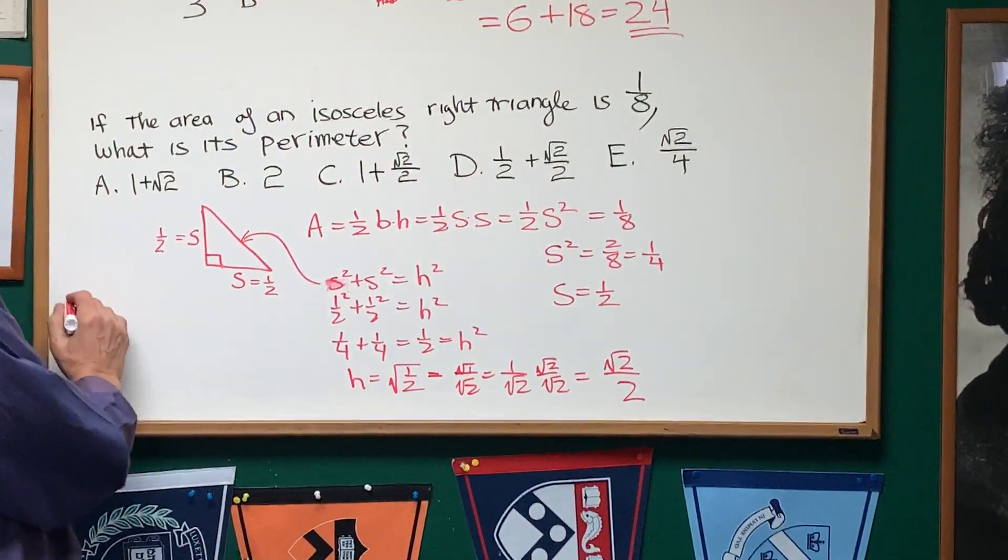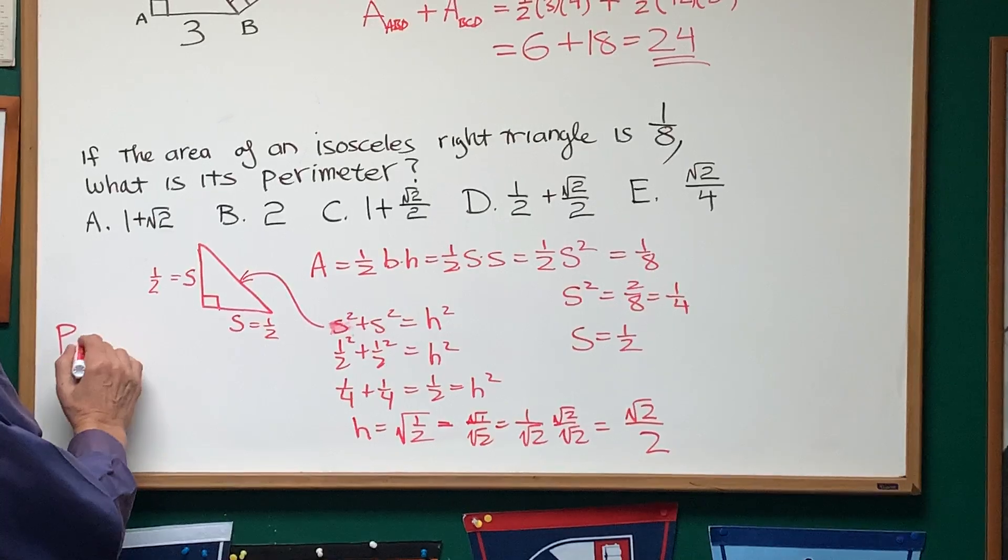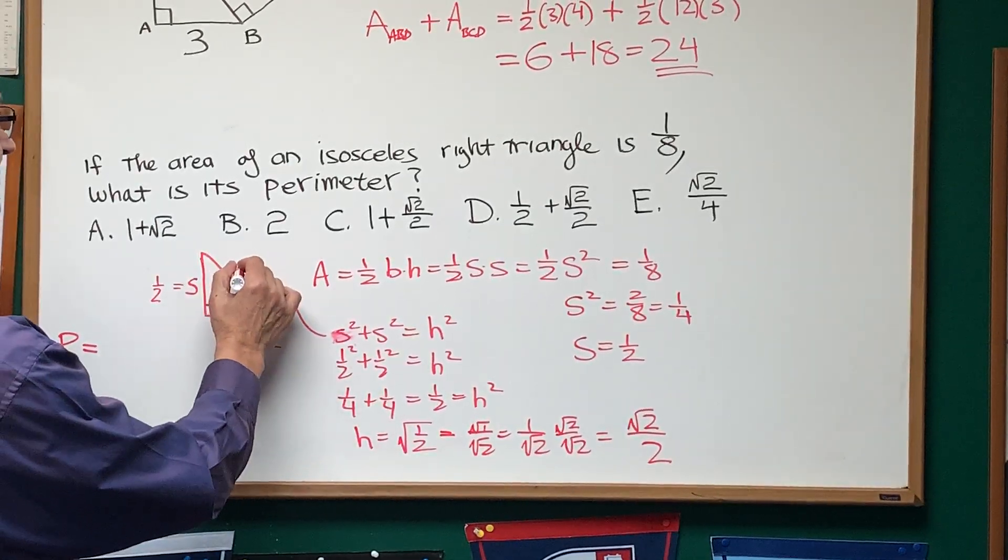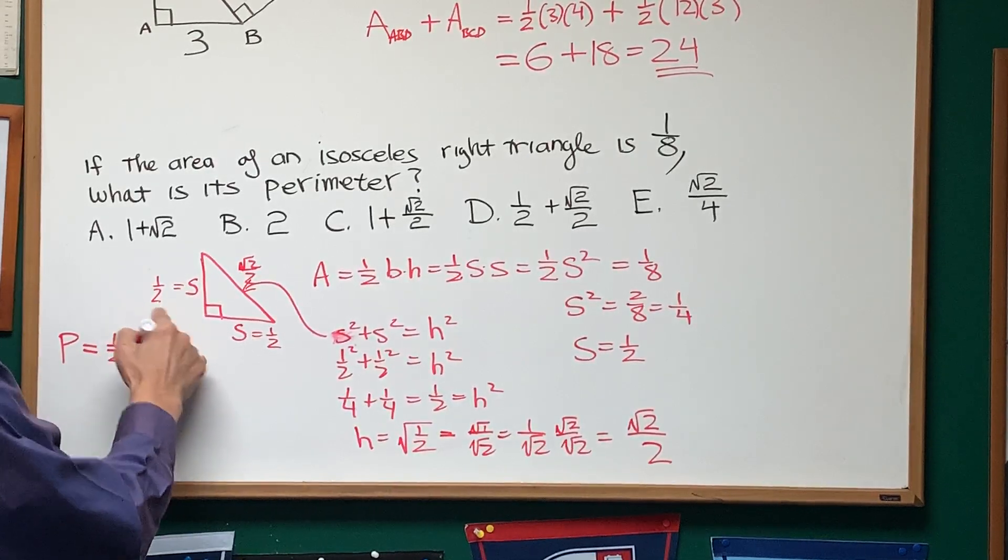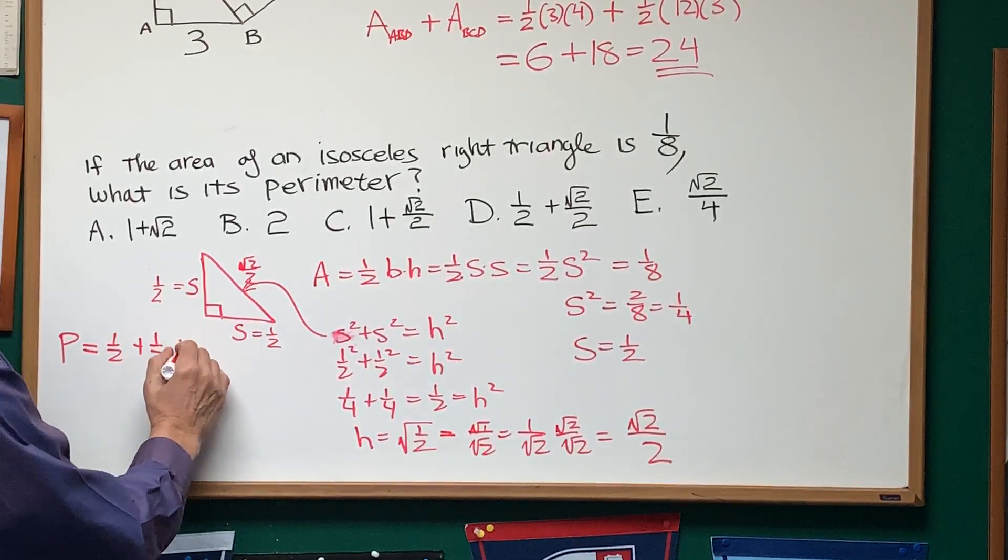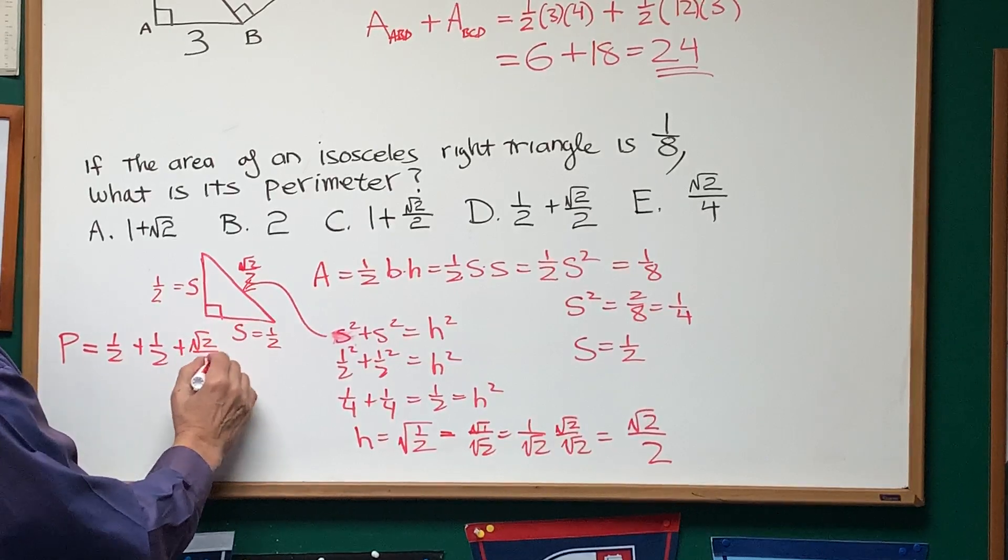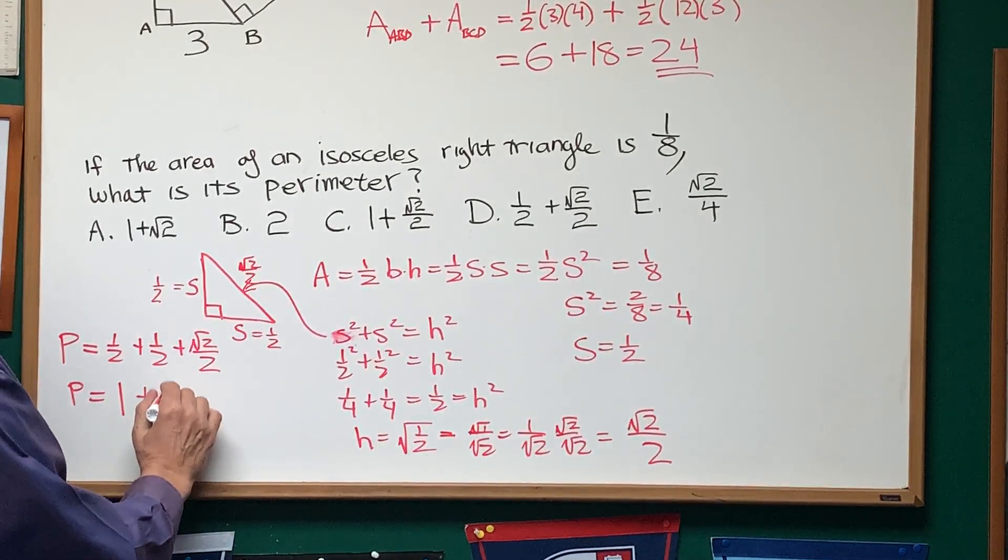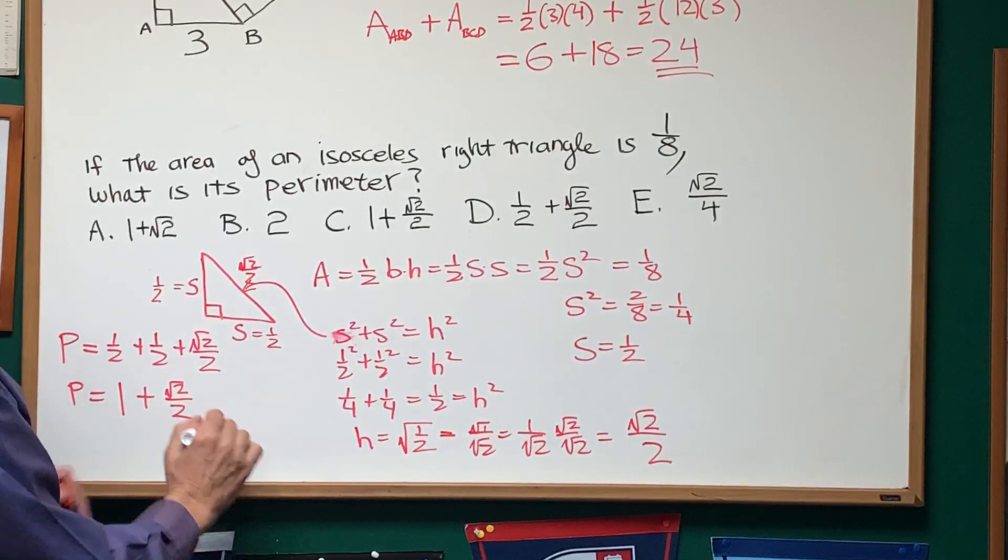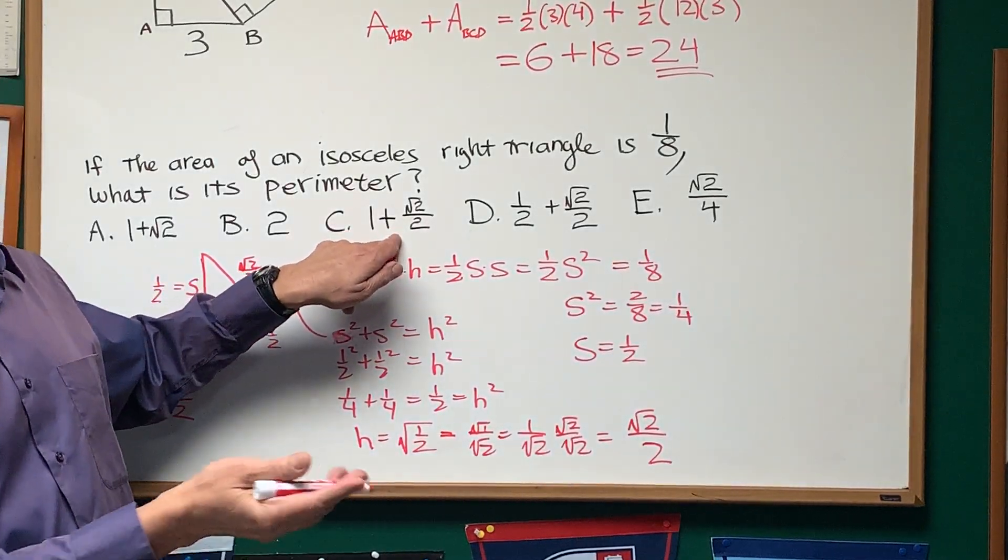So, finally, I can write down what the perimeter is, the perimeter of this triangle. Now, I know that the hypotenuse is the square root of two over two. It's going to be one-half plus one-half plus the square root of two over two. One-half plus one-half is one. So, it's one plus the square root of two over two. And that matches choice C.